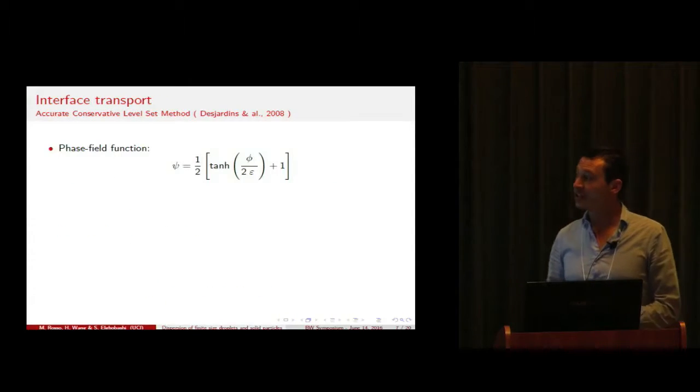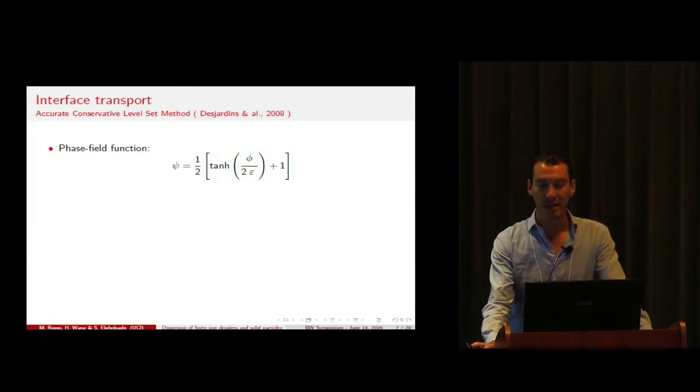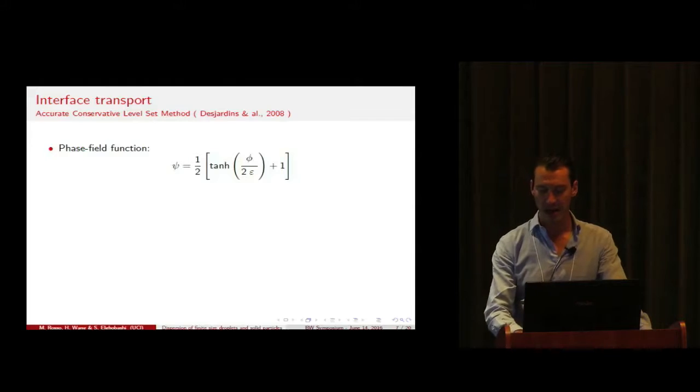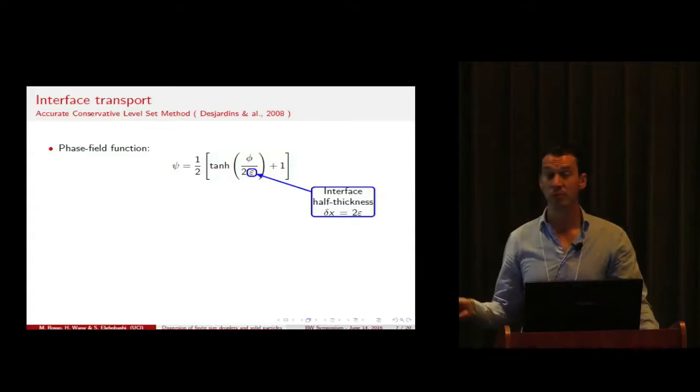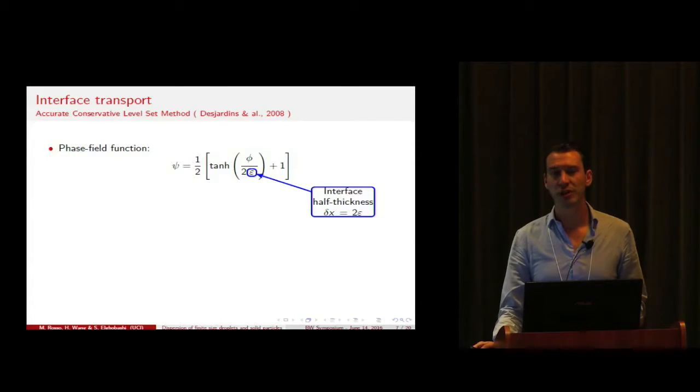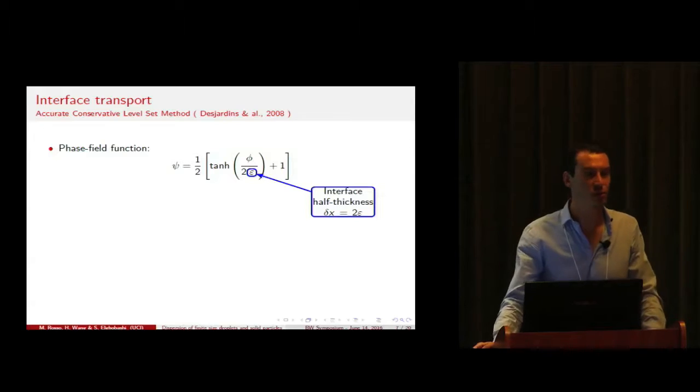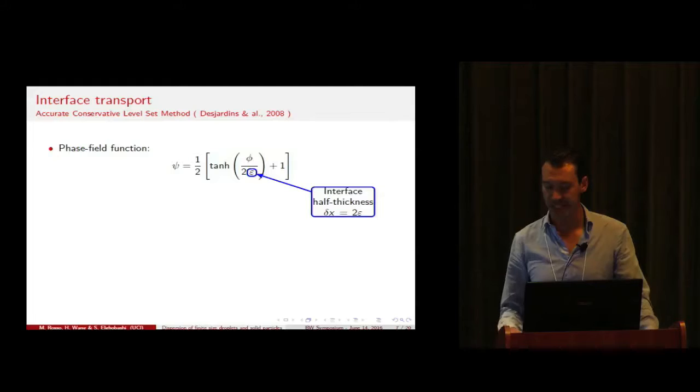For the tracking of the interface we used an accurate conservative level set method by Desjardins and Ali. This method relies on a phase field function psi that shows a hyperbolic tangent profile and depends upon the signed distance from the interface and on a smoothing parameter epsilon which determines the thickness of the interface. In all our computations we choose epsilon to give us a resolution of the interface from three to four grid spacings.